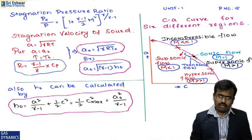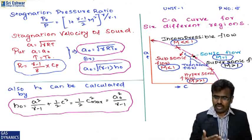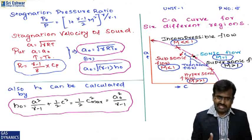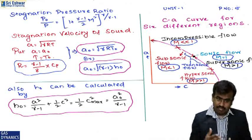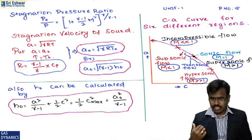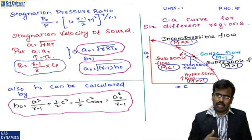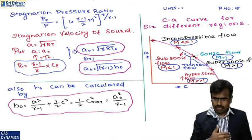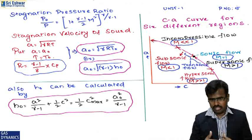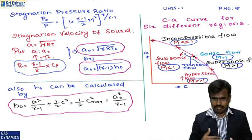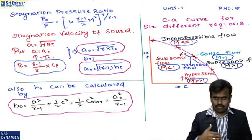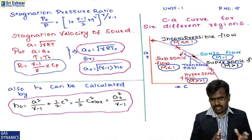Stagnation enthalpy can also be expressed as: a²/(γ−1) + ½c² = ½c²_max = a₀²/(γ−1). The C-A curve has six different regions of fluid flow: incompressible flow, subsonic flow, sonic flow, supersonic flow, hypersonic flow, and transonic flow — which lies between subsonic and supersonic.